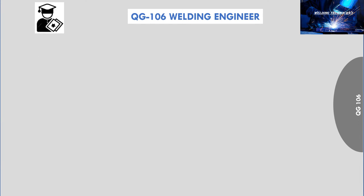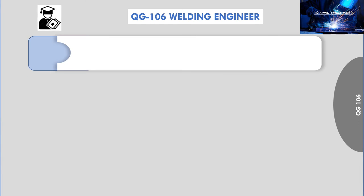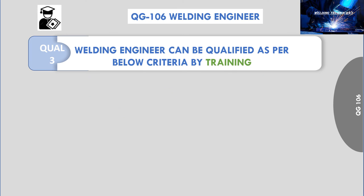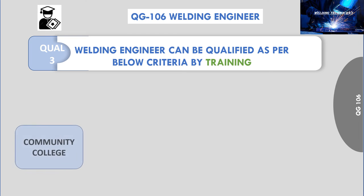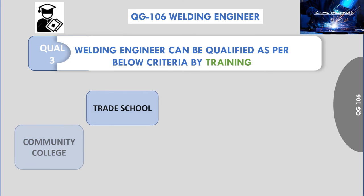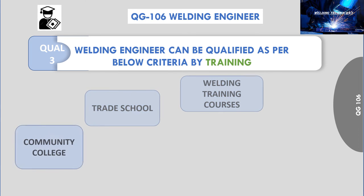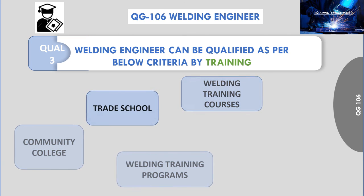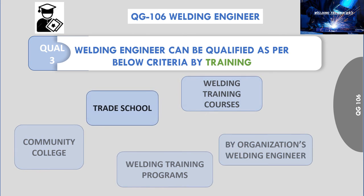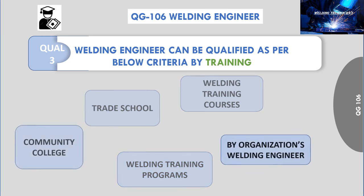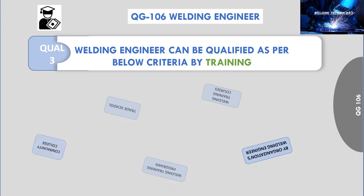Qualification 3: a welding engineer can be qualified by training. Training by a community college, a trade school, a welding training course, or welding training programs. The organization's welding engineer may also be adequate for providing such training.